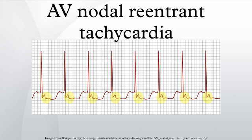It is a type of supraventricular tachycardia, meaning that it originates from a location within the heart above the bundle of His. AV nodal reentrant tachycardia is the most common regular supraventricular tachycardia.